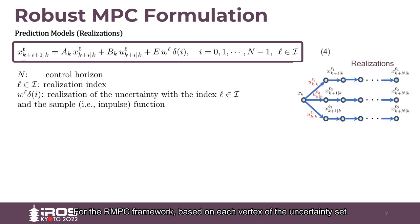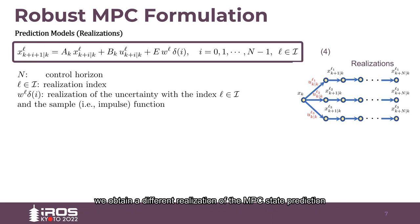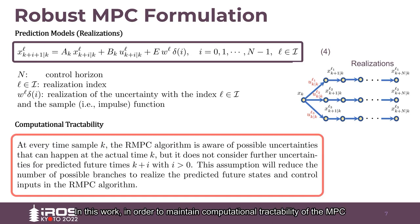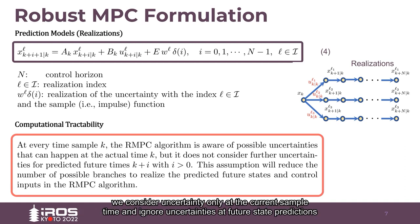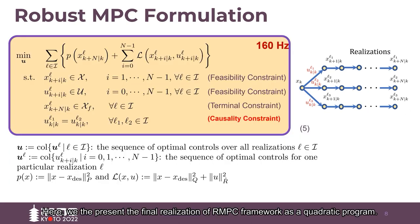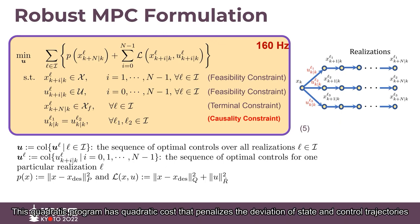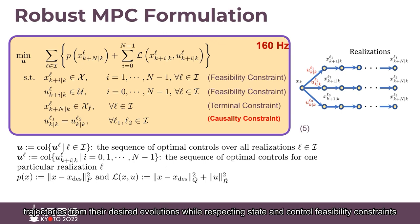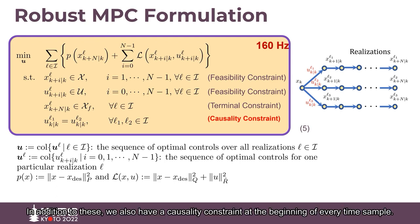For the RMPC framework, based on each vertex of the uncertainty set, we obtain a different realization of the MPC state prediction. In this work, in order to maintain computational tractability of the MPC, we consider uncertainty only at the current time sample and ignore uncertainties at future state predictions. Here, we present the final realization of RMPC framework as a quadratic program. This quadratic program has quadratic costs that penalizes the deviation of state and control trajectories from their desired evaluation, while respecting state and control feasibility constraints. In addition to these, we also have a causality constraint at the beginning of every time sample.